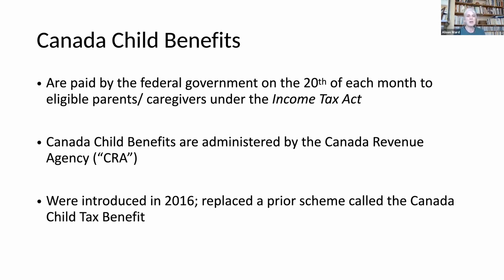I'm going to start with a quick overview of Canada Child Benefits. Canada Child Benefits are paid by the federal government — paid monthly to eligible parents or people caring for children — and they're paid out under the Income Tax Act. Because it's paid out under the Income Tax Act, Canada Child Benefits are administered by the Canada Revenue Agency, which we usually refer to as CRA.